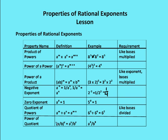In the power of the quotient, I have some quotient a divided by b, and I'm taking it all to the y. I can separate out the numerator and denominator and apply the power y to each — a to the y over b to the y. If I had something like 9 over 4, all squared, that's going to be the same as 9 squared over 4 squared, or 81 over 16.